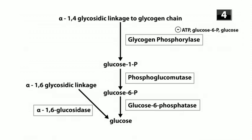What about the branching alpha-1,6 linkages? The enzyme that breaks those down is alpha-1,6-glucosidase, also called debranching enzyme. It breaks down the alpha-1,6 linkages directly into glucose — you don't need to go through all those other steps, so it's a bit more efficient.